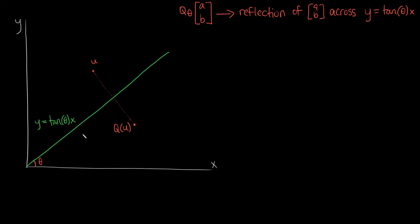This is going to require some matrices. We're trying to find a matrix as our final answer. When you're working with matrices, it can be useful to think about how you can bend your problem — in our case, reflecting across a line. What if we could rotate our problem into something that we do know how to solve? In this case, rotation is the right way to go.